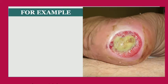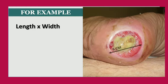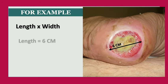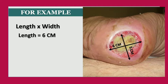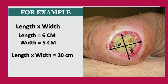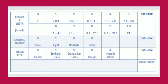For example, if the greatest length is 6 cm and the greatest width is 5 cm, then length × width equals 30 cm². You do not use 30 as the score directly — you compare it with the chart. The chart scores range from 0 to 10, covering measurements up to above 24 cm². Since 30 cm² is above 24, you assign a score of 10.